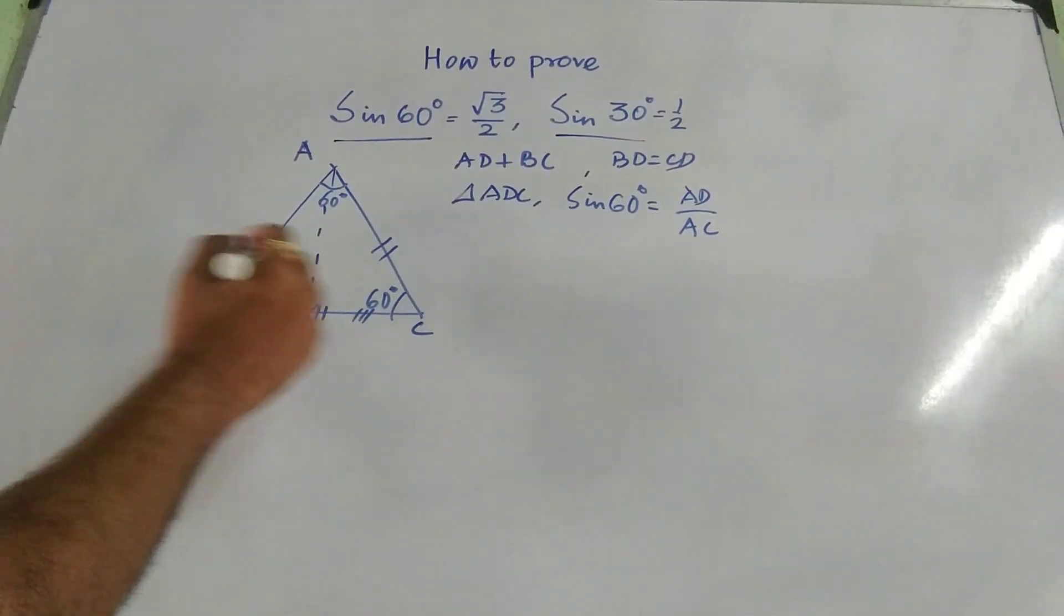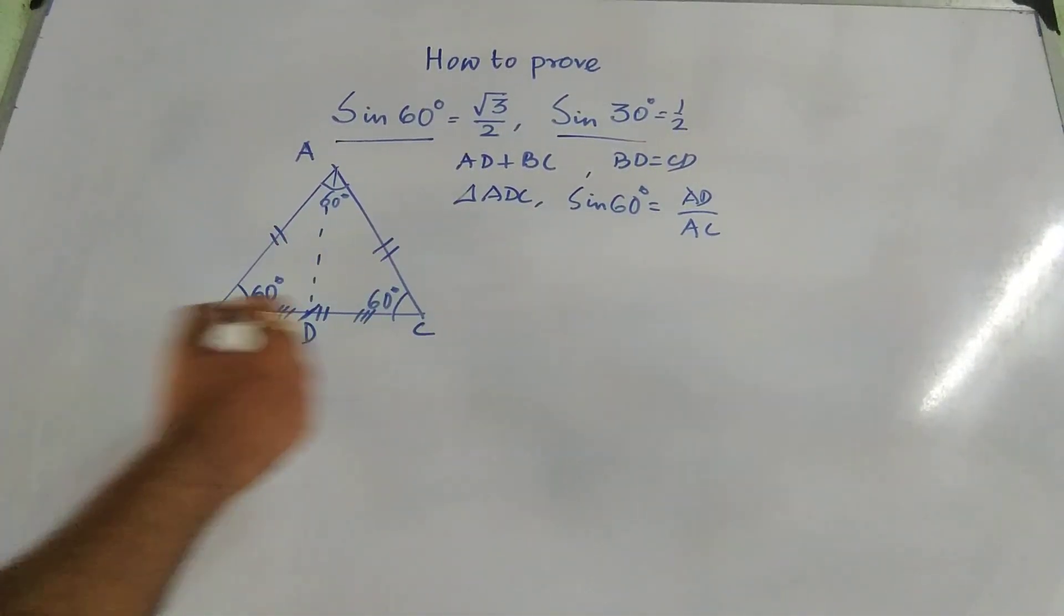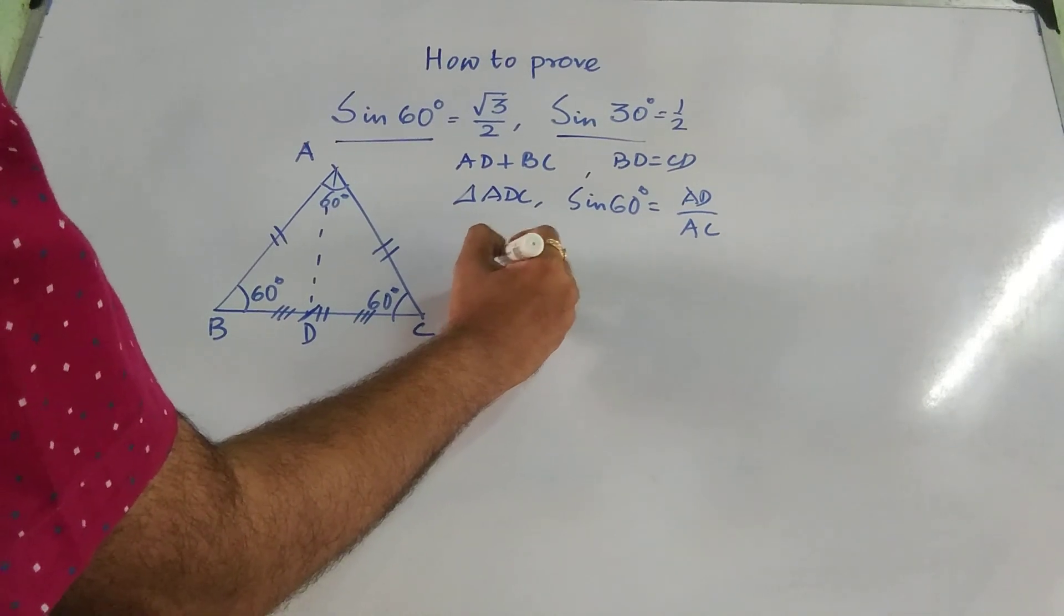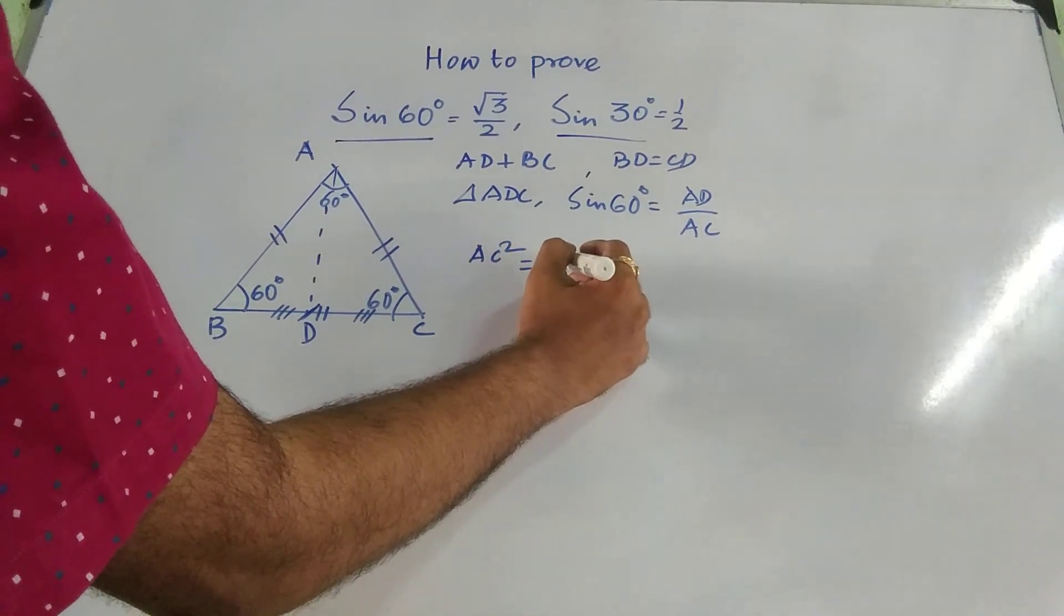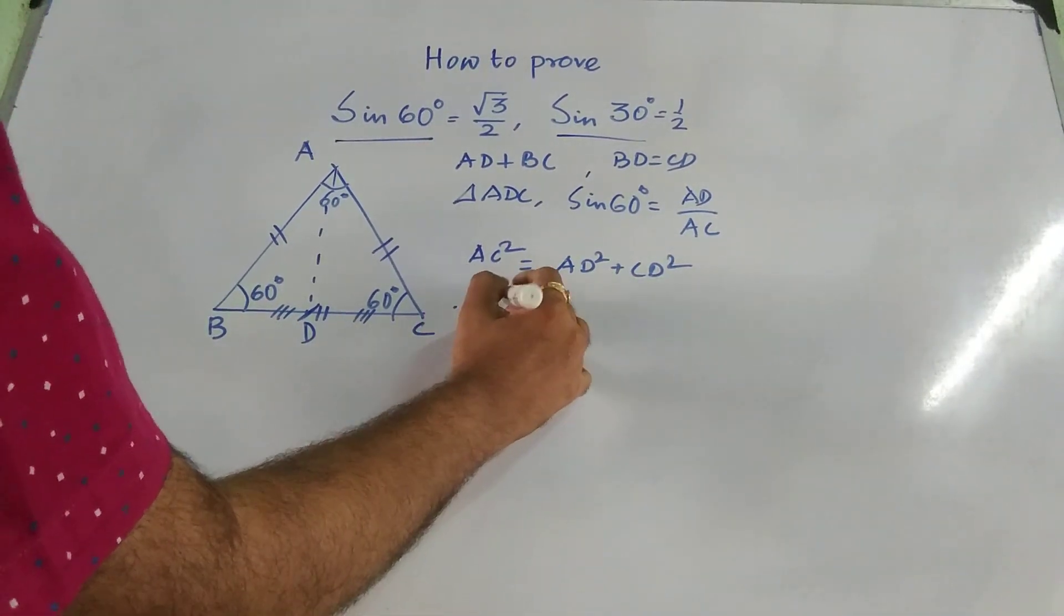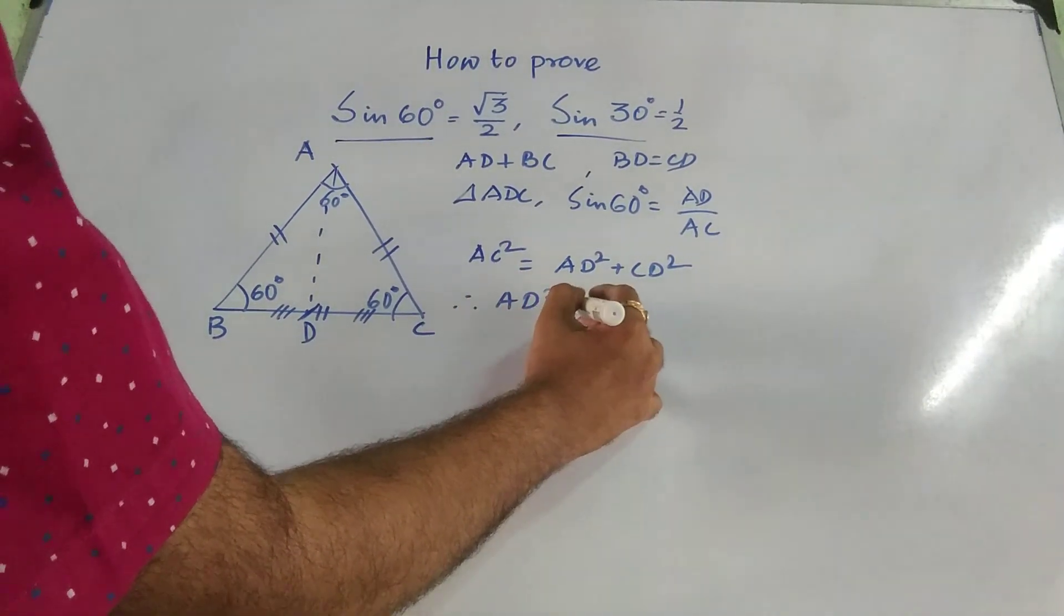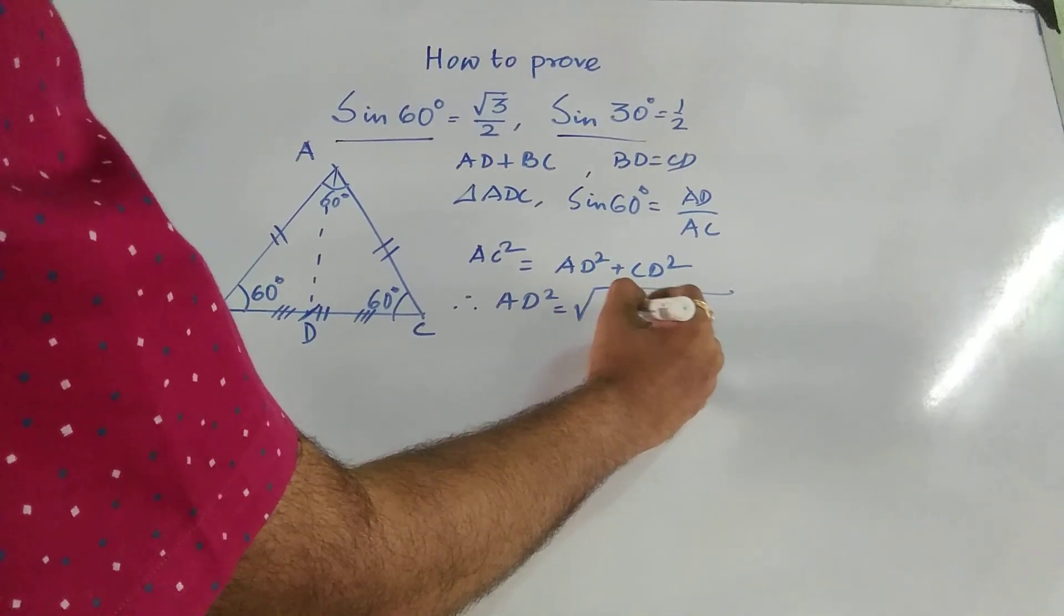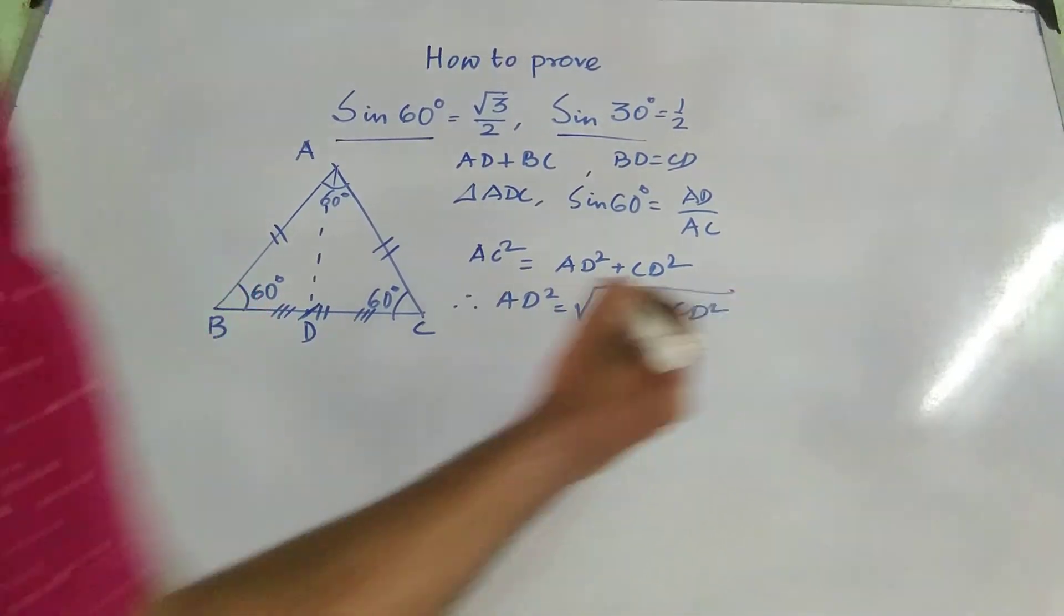So now applying Pythagoras theorem, what we can say from the same triangle, AD square plus CD square. So AD square equal to square root of AC square minus CD square.